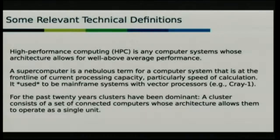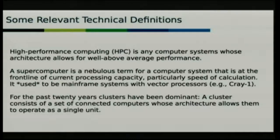Typically we would have measurements such as how many floating point operations per second it can do. That's a popular metric used by the top 500, not necessarily the best metric, because there are such things like how fast you access your RAM, how fast you do any sort of computational problems.